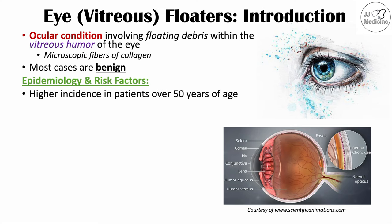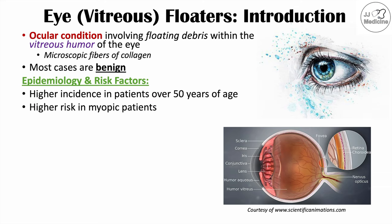The epidemiology and risk factors include the following. There is a higher incidence in patients over the age of 50. As a patient ages, the vitreous humor can change in consistency, leading to what we call vitreous degeneration — a thinning of the supporting structures in the vitreous humor. The risk is also higher in myopic patients, or patients who are nearsighted.